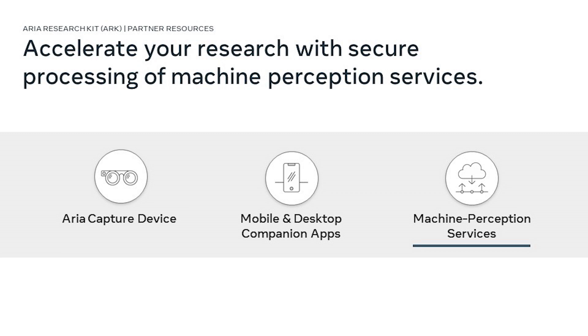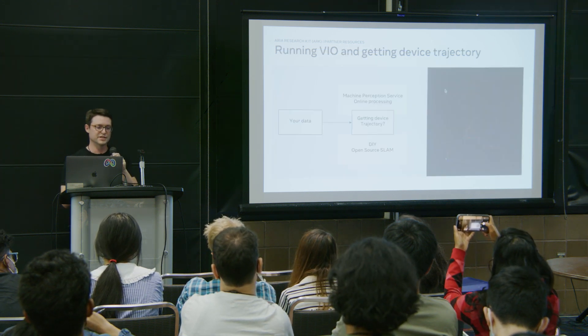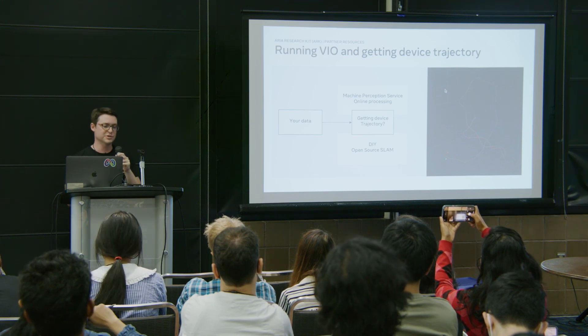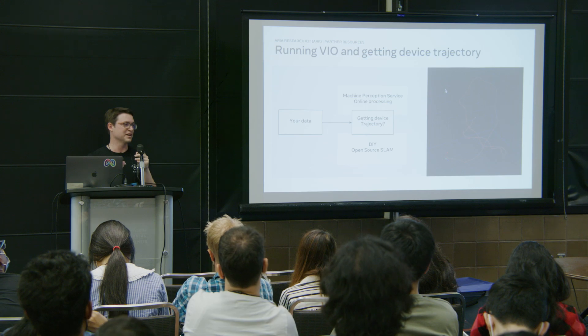The last piece available on the desktop app is machine perception services. These services give you access to a trajectory of ARIA sequences — meaning you can know where the person was and how they were moving. You can run machine perception services or, alternatively, use open source tools locally with frameworks like ORB-SLAM or your own SLAM algorithm and compare results.